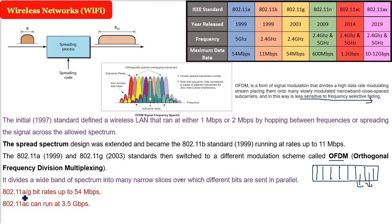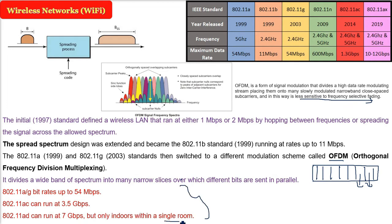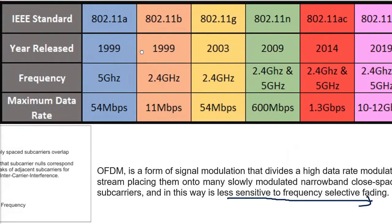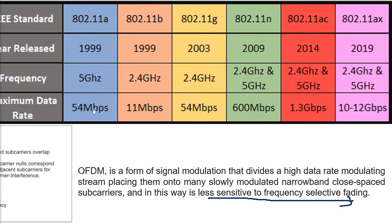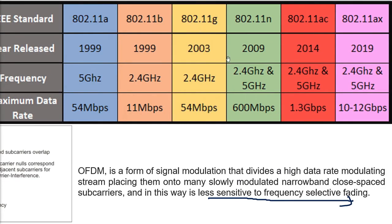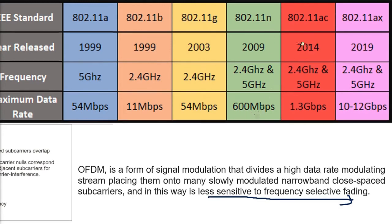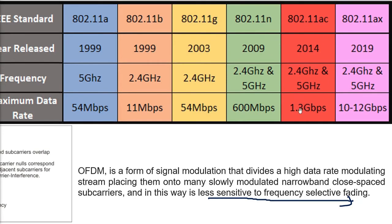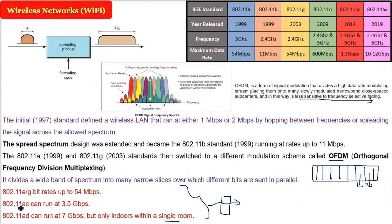Different 802.11 versions offer different speeds. 802.11a gives 54 Mbps, 802.11b gives 11 Mbps, 802.11g gives 54 Mbps, and 802.11n gives 600 Mbps. 802.11ac reaches 1.3 Gbps, and 802.11ax reaches 10–12 Gbps. The AD variant works only indoors because it cannot penetrate walls. The frequency ranges span 2.4 GHz up to 5 GHz.